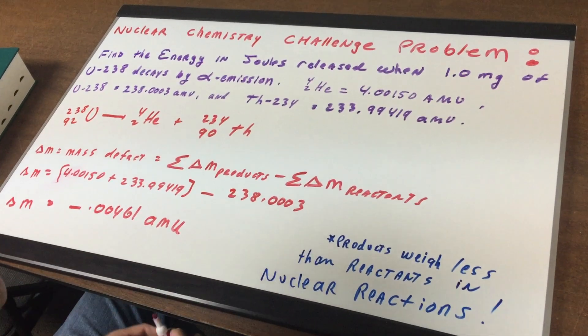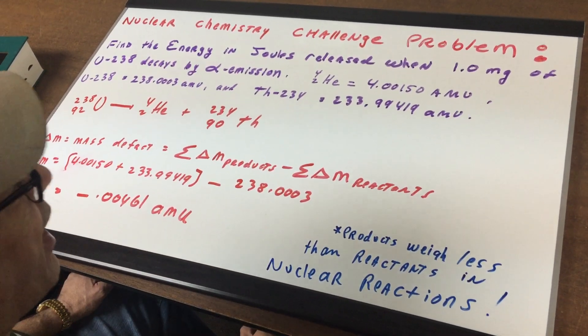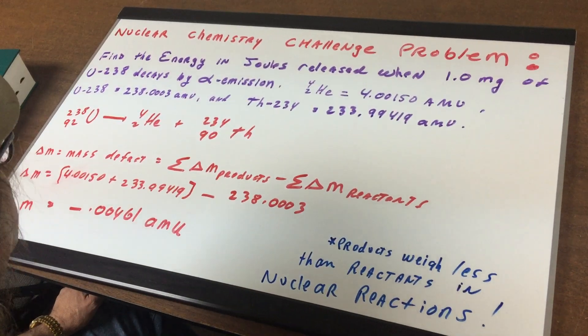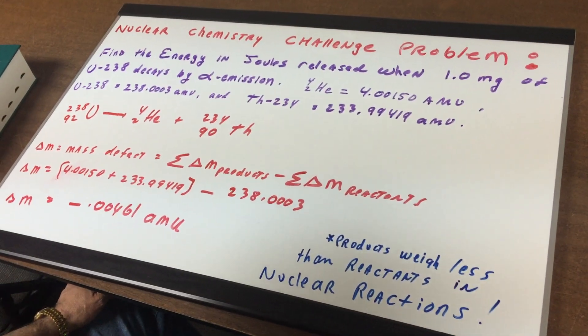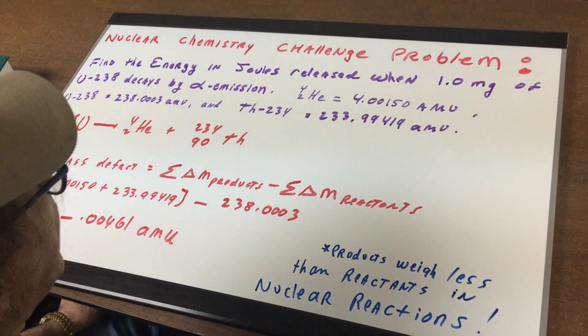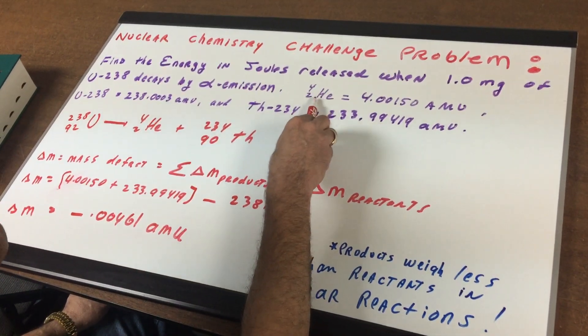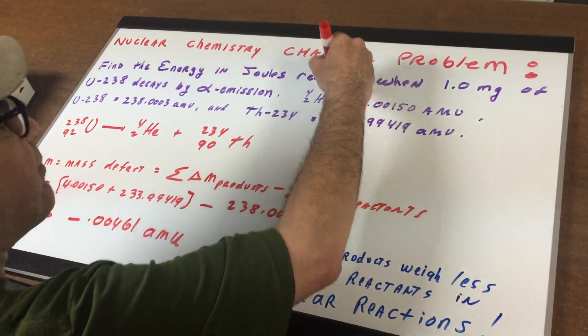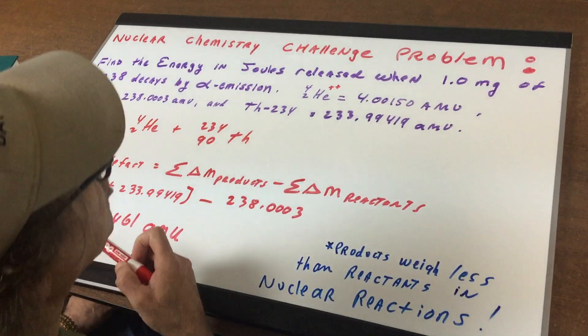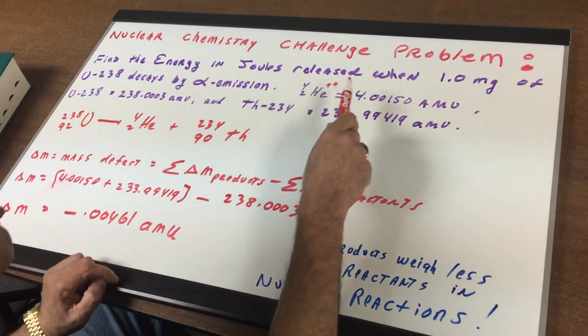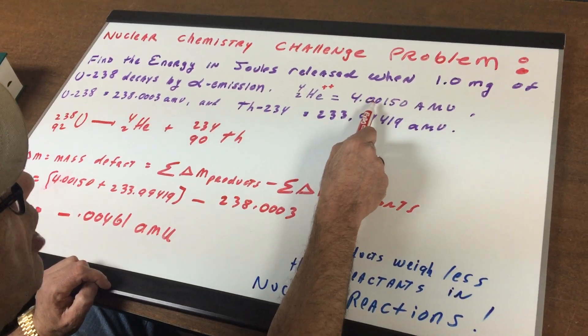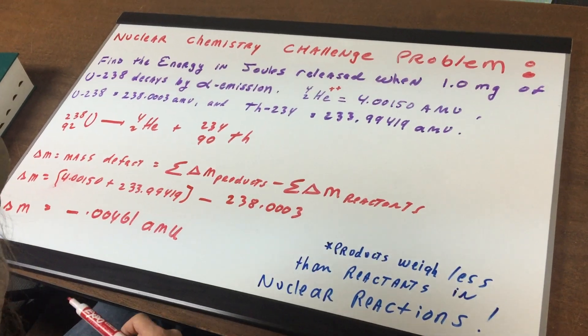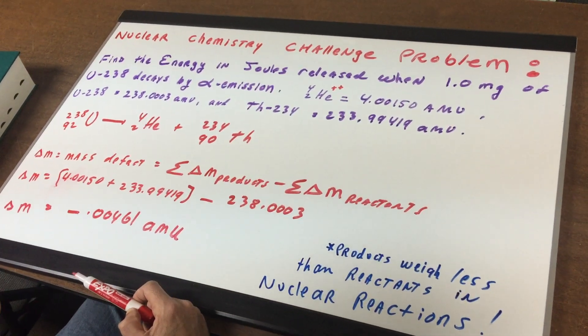What we're going to do is we're going to find the energy released in joules when only a tiny, tiny amount, one milligram, boy that's a small amount, of uranium-238 decays by an alpha emission. And I gave you the masses of an alpha particle, which is nothing more than a helium nuclei. But notice we often put plus plus there. So a helium nuclei stripped of its electrons is an alpha particle. The true mass is 4.00150 AMUs. I give you the true mass of uranium-238 and the true mass of thorium-234.